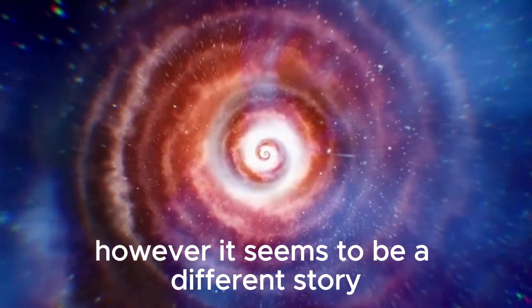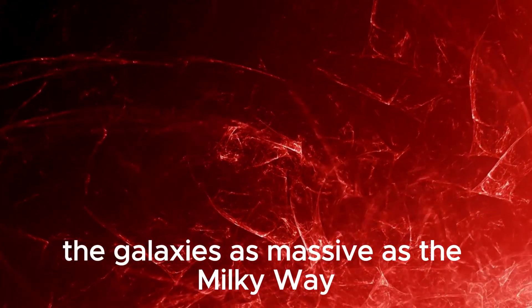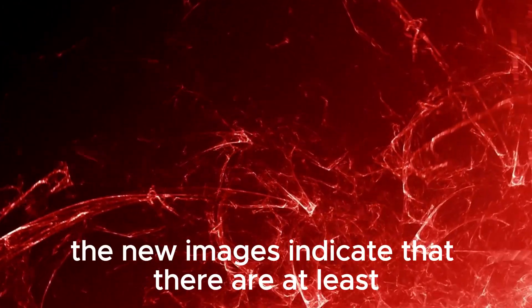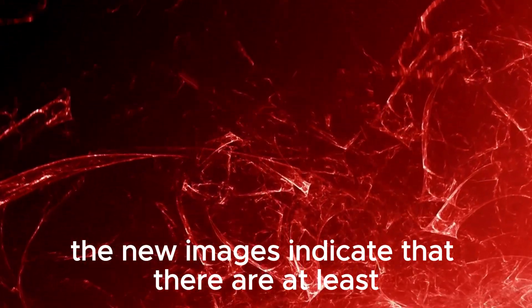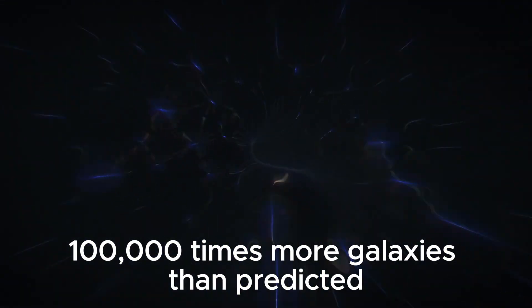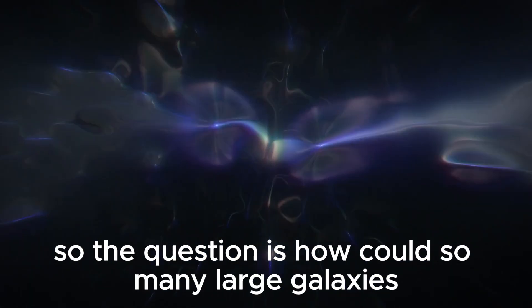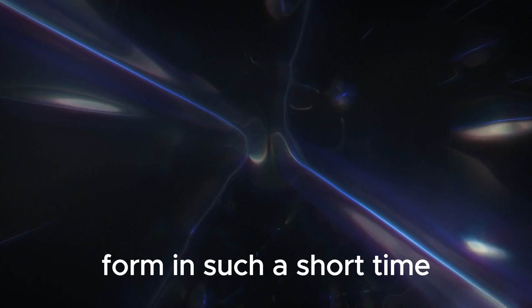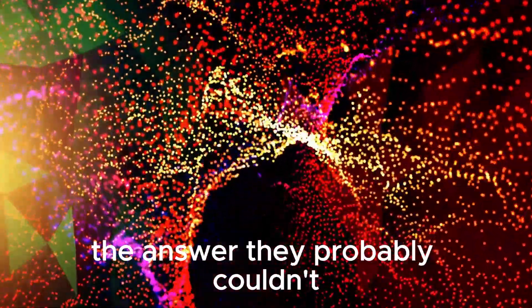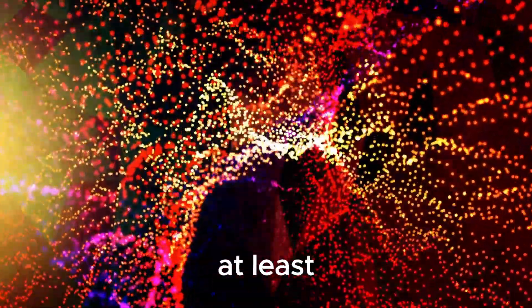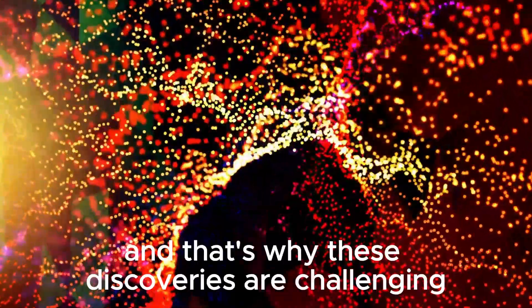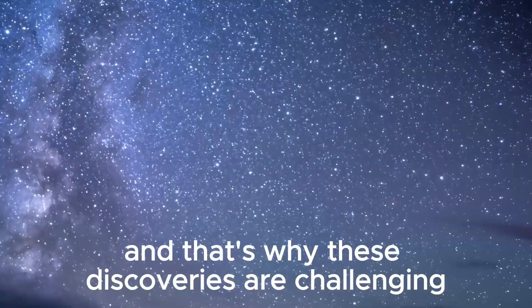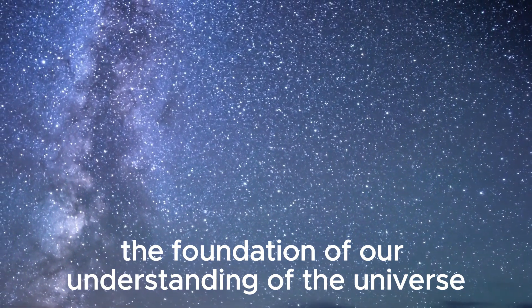However, it seems to be a different story. The galaxies as massive as the Milky Way were already pretty common even a few hundred million years after the supposed Big Bang. The new images indicate that there are at least 100,000 times more galaxies than predicted at high redshifts more than 10. So, the question is, how could so many large galaxies form in such a short time? The answer, they probably couldn't, at least not under the constraints of the Big Bang theory. And that's why these discoveries are challenging the foundation of our understanding of the universe.